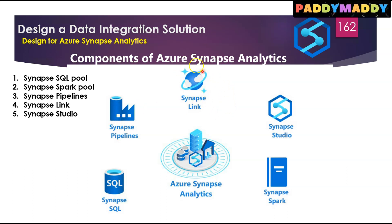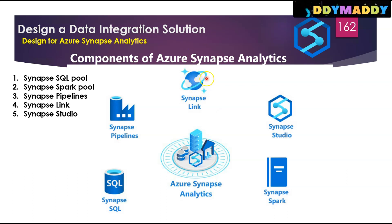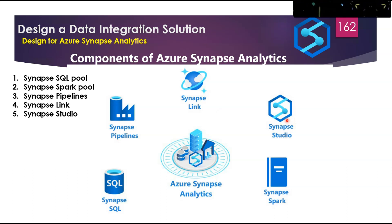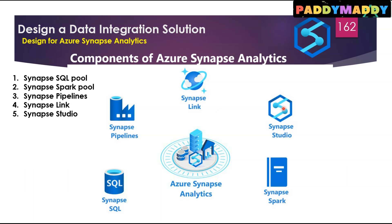Synapse Link is a component that allows you to connect to Cosmos DB, and you can use it to perform near real-time analytics over the operational data stored in Cosmos DB. Synapse Studio is a web-based IDE that can be used centrally to work with all capabilities of Azure Synapse Analytics. You can use Synapse Studio to create SQL and Spark pools, define and run pipelines, and configure links to external sources.